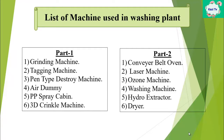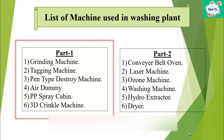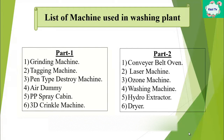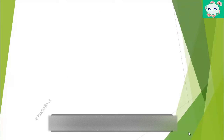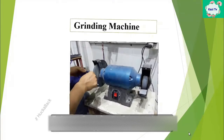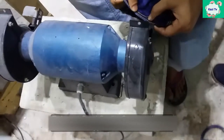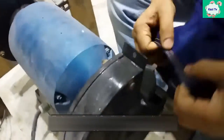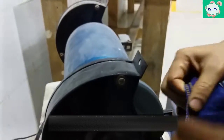Today I will discuss Part 1 listed machines, and in my next video I will discuss Part 2 listed machines. So let's start Part 1. Grinding machine: this machine is used to grind the edges of garments. This machine has two wheels.